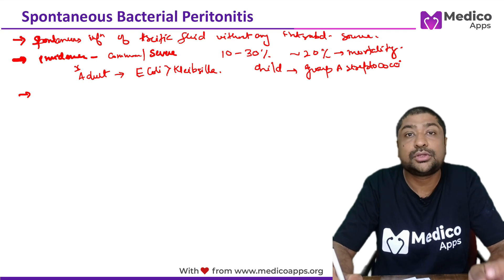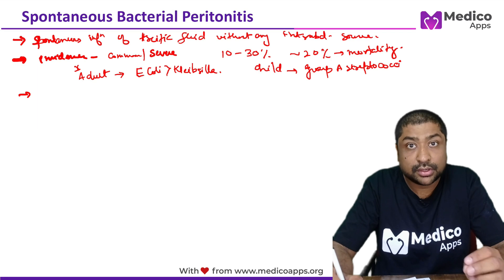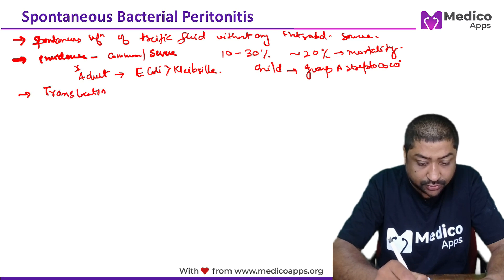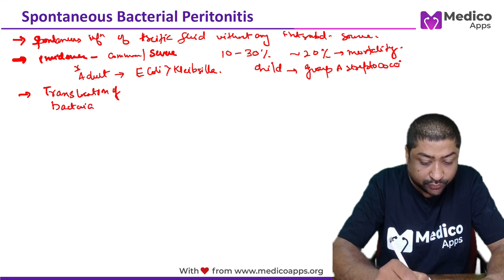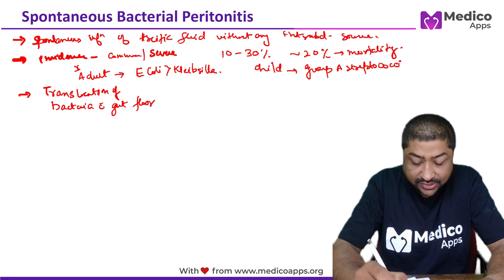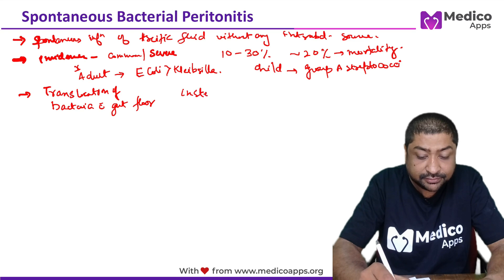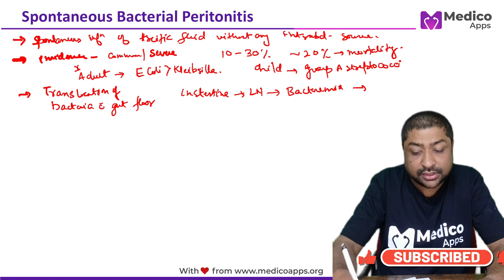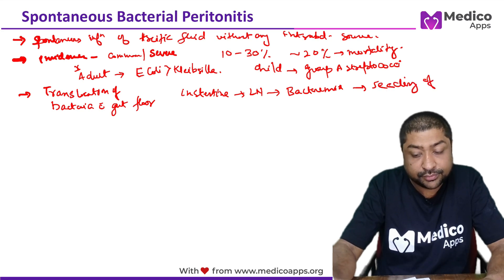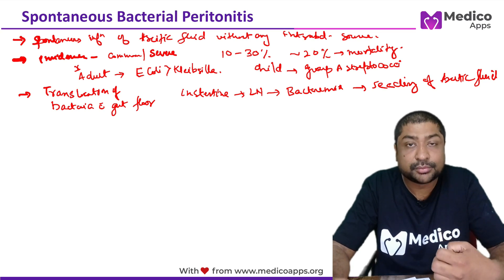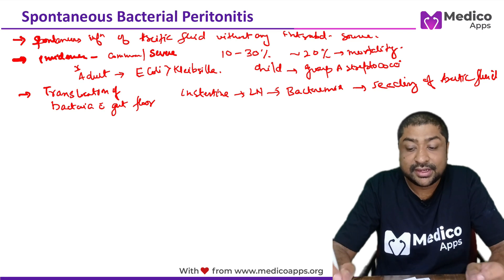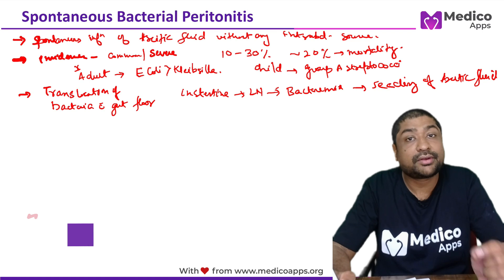Since there is no intra-abdominal source, the hypothesis for how ascitic fluid gets infected is bacterial translocation from gut flora. Bacteria translocate from the intestine to lymph nodes, from lymph nodes they cause bacteremia, and this bacteremia leads to seeding of the ascitic fluid. There is no intra-abdominal source involved.